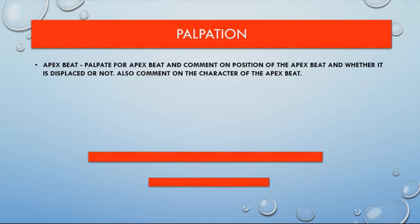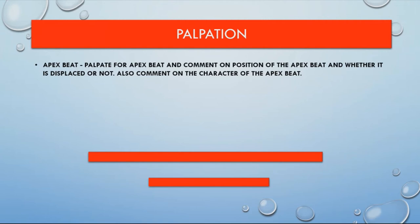Palpation: palpate for the apex beat and comment on its position — whether it is displaced or not — and on its character. Start palpating from the 7th or 8th intercostal space and move upward through the 6th and 5th. If unable to palpate, ask the patient to turn to the left side and palpate again.